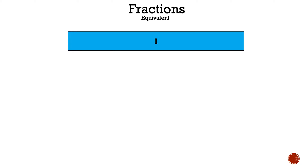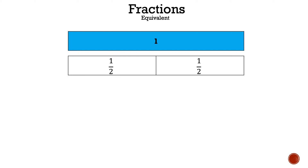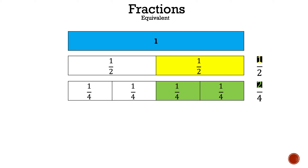Now let's take a look at this rectangle that you see. It represents one. We are now going to divide it into two equal sections, so that means each one is one-half. Now we're going to mainly focus on the half that is on the right. Now we're going to divide the whole rectangle again into four equal sections, and now we're going to mainly focus on the right. Hopefully you see an equivalence between these two fractions.